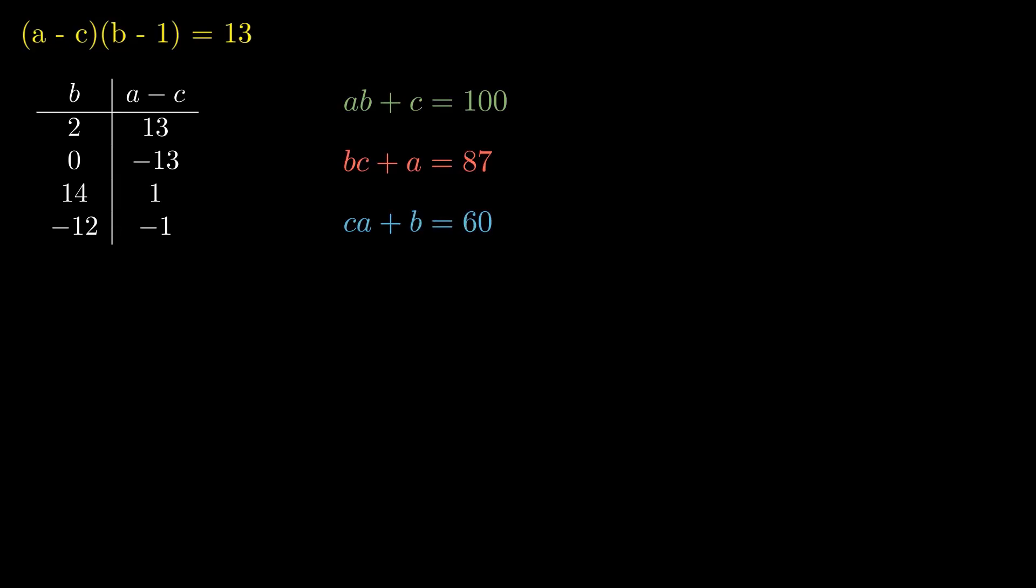Let's start with case 1. If B equals 2 and A minus C equals 13, we plug these into our equations, and we get a fractional value for A. That means this case doesn't work. All right, moving on.